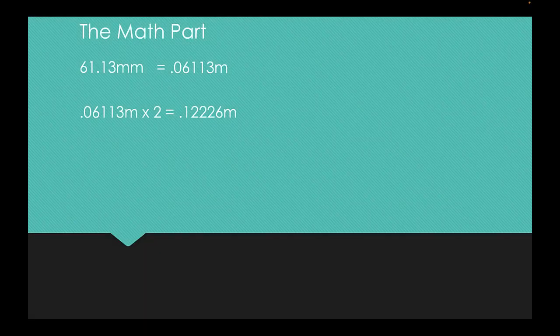So 0.06113 meters by 2 equals 0.12226 meters. Now we have the length of our full wavelength in meters.